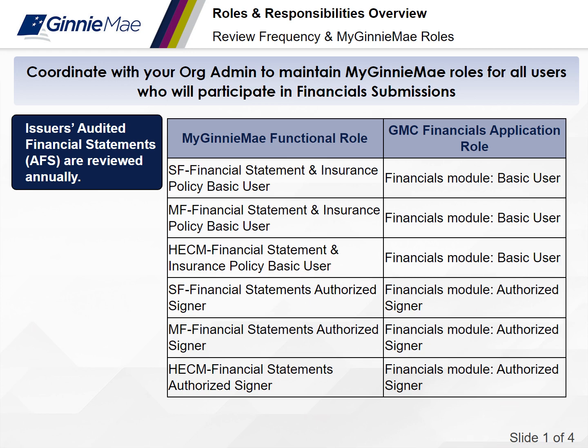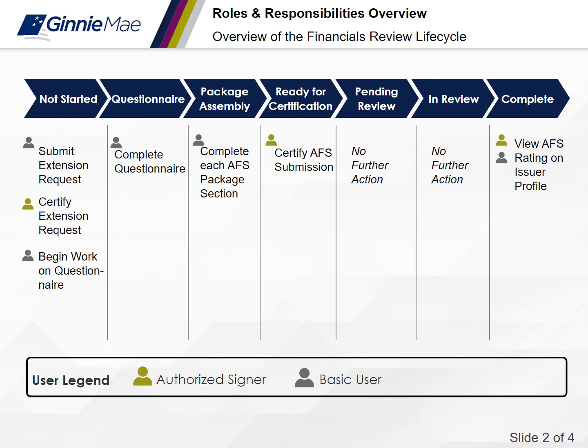Reviews are created annually upon an issuer's fiscal year end. Issuers must coordinate with their organization admins to maintain MyGinnieMae roles for all users who will participate in annual financial submissions to Ginnie Mae. Here is an overview of the financials review lifecycle. The financials lifecycle contains seven phases, from not started to complete. This e-learning will cover each phase in depth.